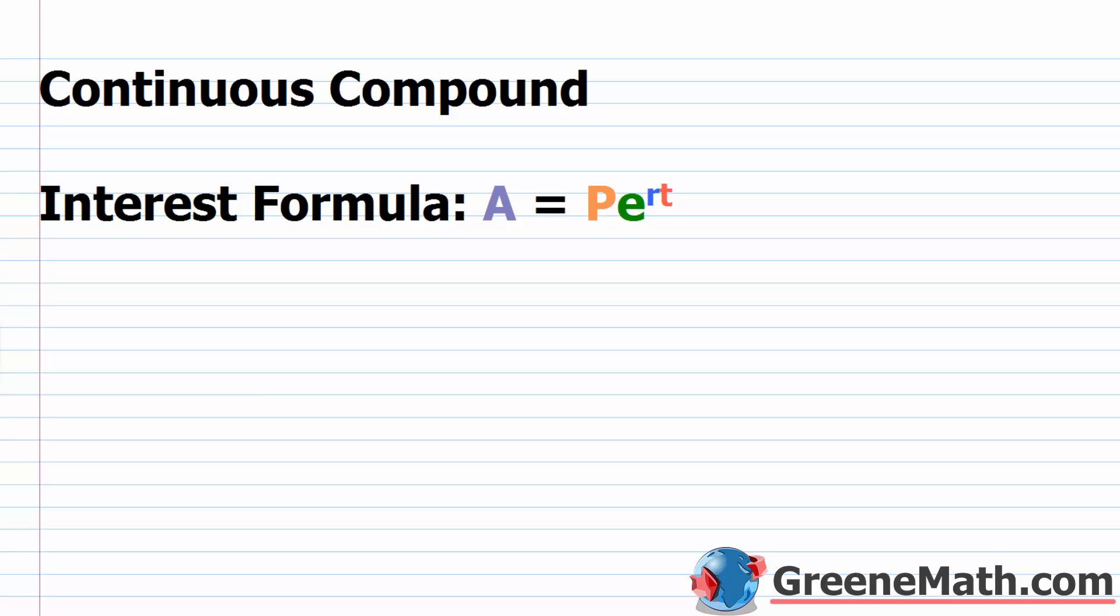In this lesson, we want to talk about the continuous compound interest formula, A equals P times our special number E raised to the power of R times T.